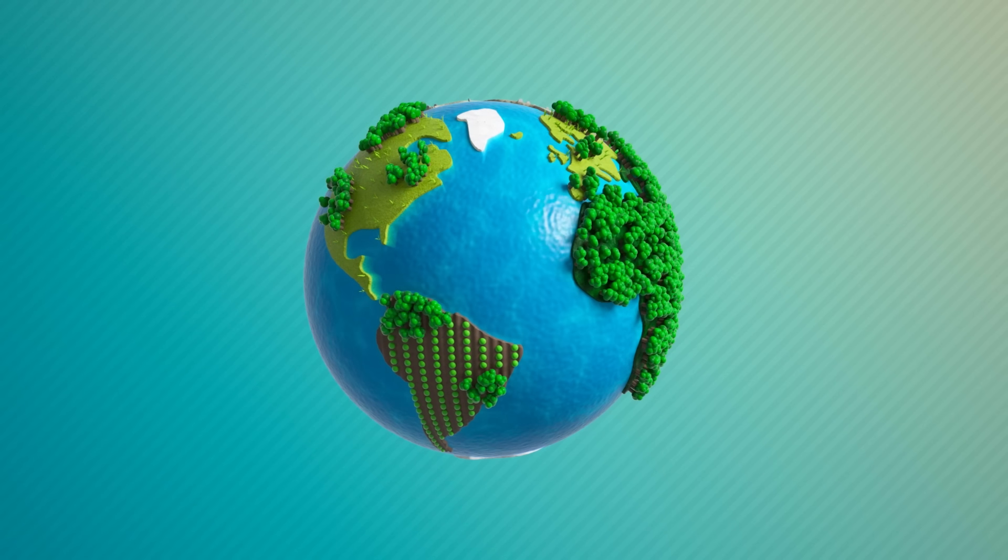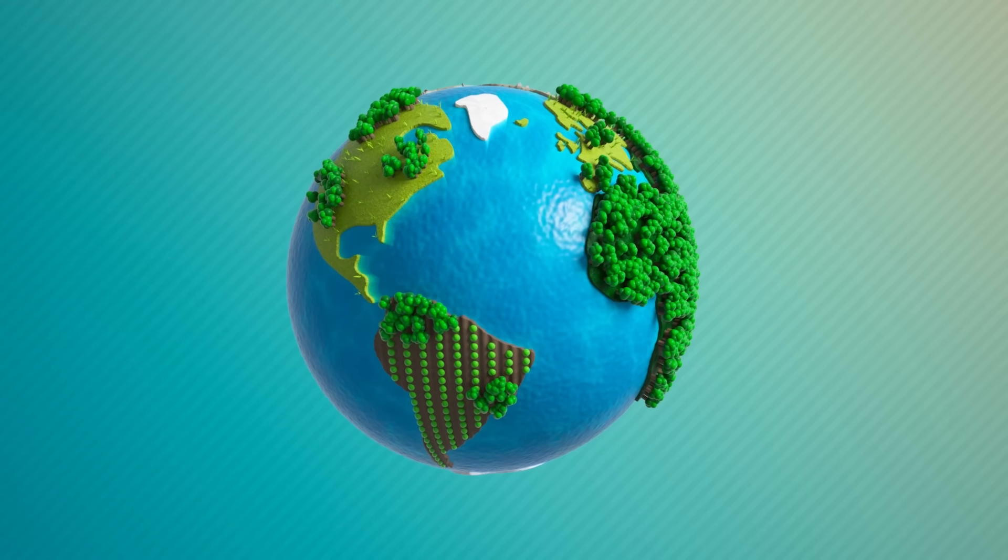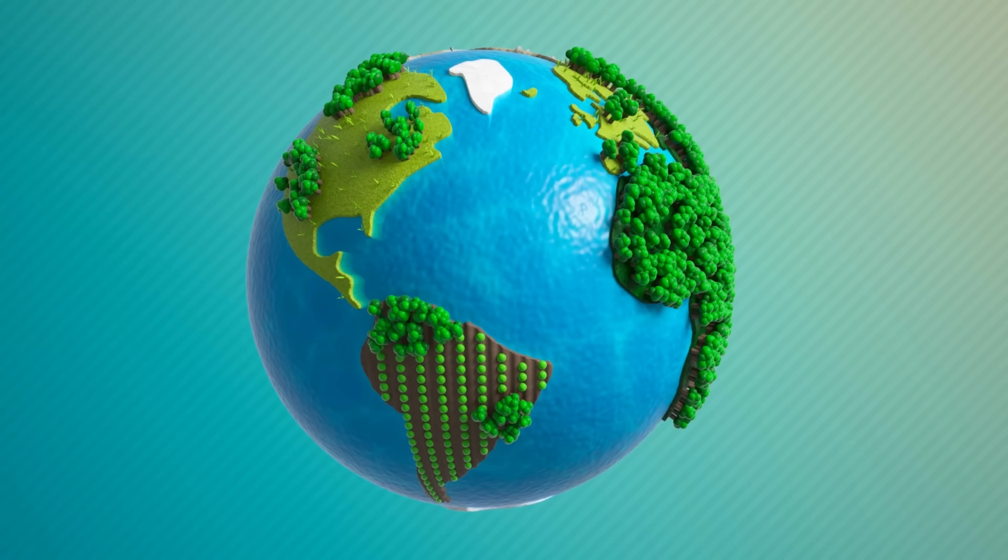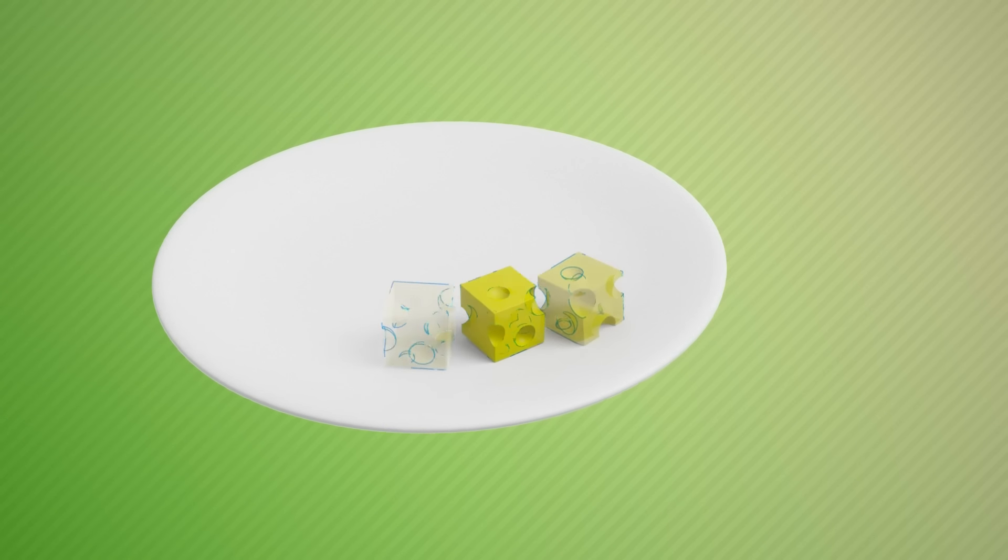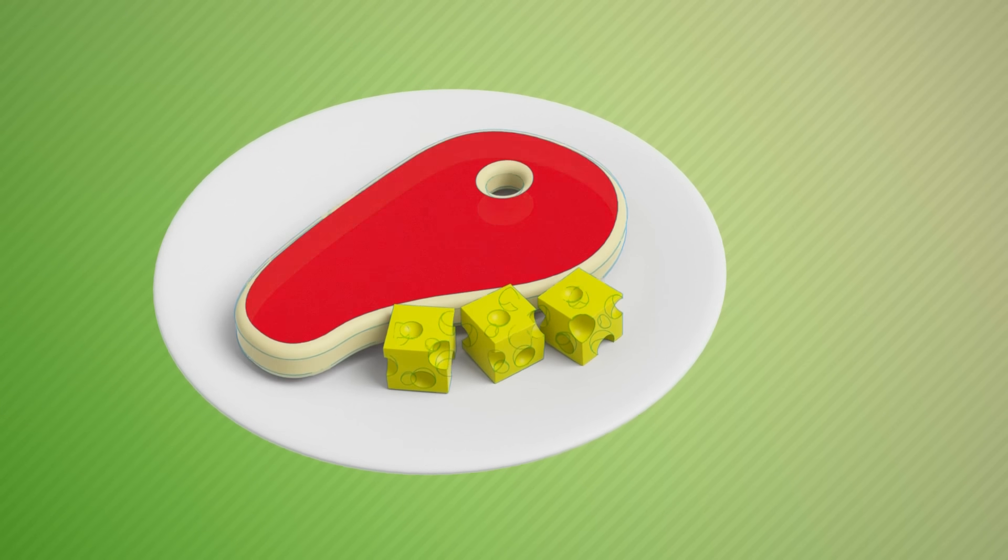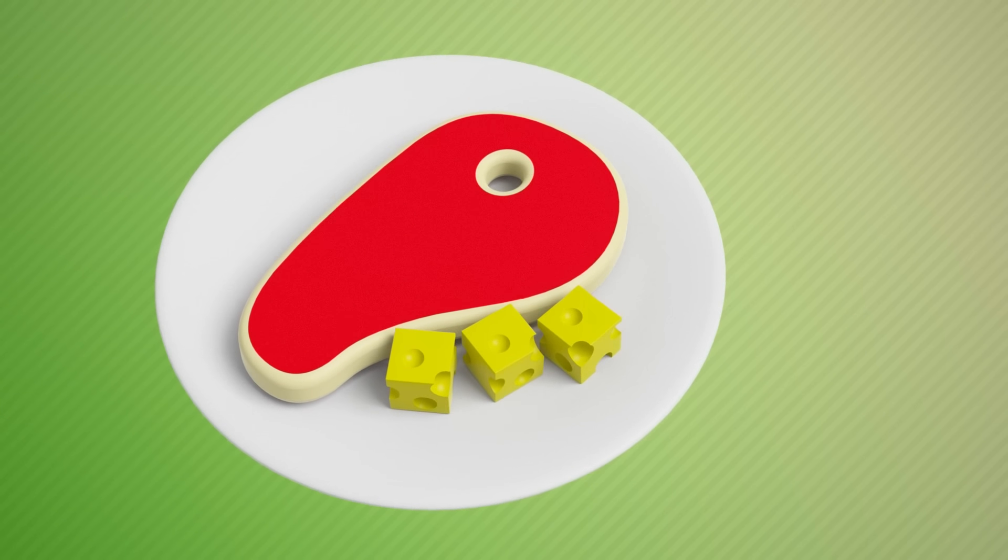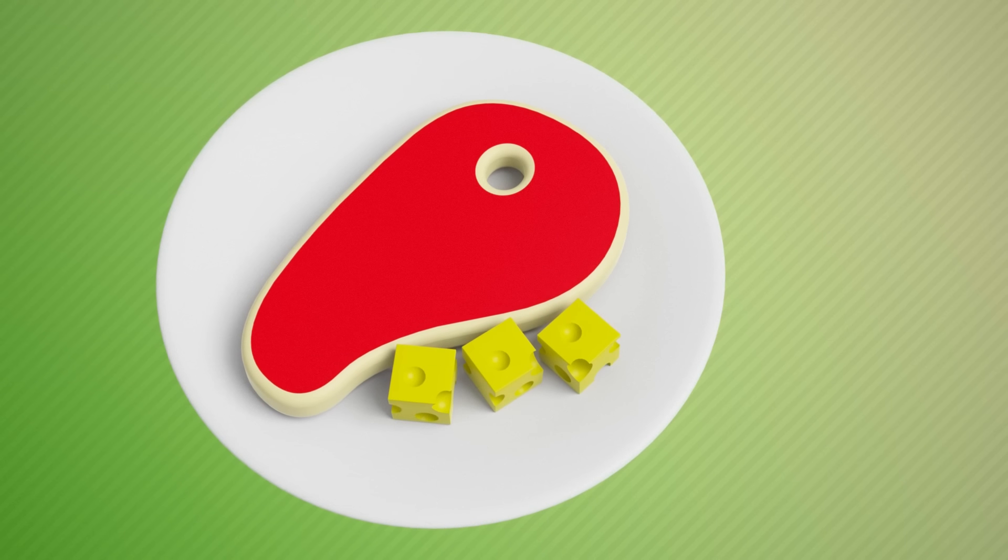So far, we've only looked at what's possible today, but innovations could also reshape the food landscape. When it comes to how we grow food, precision agriculture and innovations in aquaculture could further reduce the environmental impact of our food system. And when it comes to replacing animal-sourced foods, precision fermentation and cultured meat are two potential solutions that could make a transition easier.